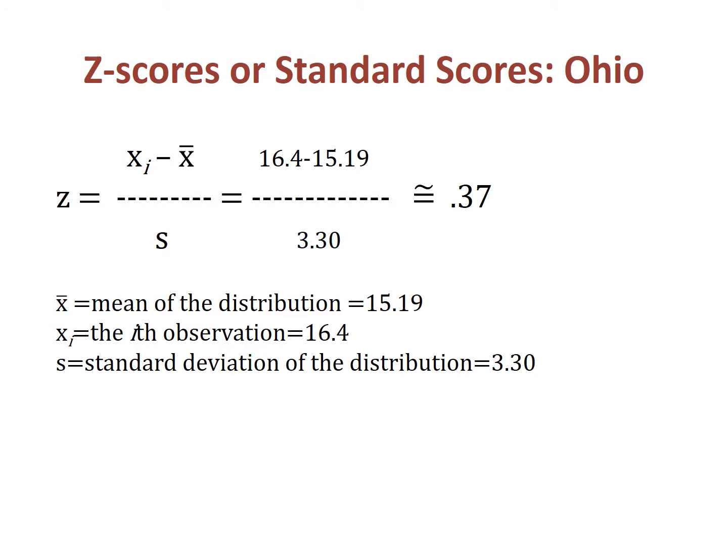Here the poverty rate for Ohio is used as an example. The national mean for the poverty rate is 15.19 and the standard deviation is 3.30. The value for Ohio is 16.4. These numbers are plugged into the equation, and we determine the z-score with simple arithmetic. Thus, we find that the z-score for Ohio is approximately 0.37.